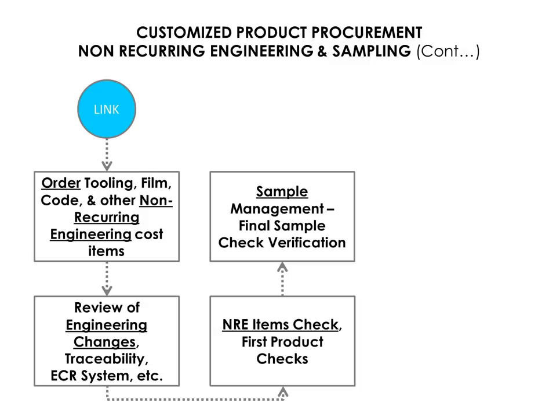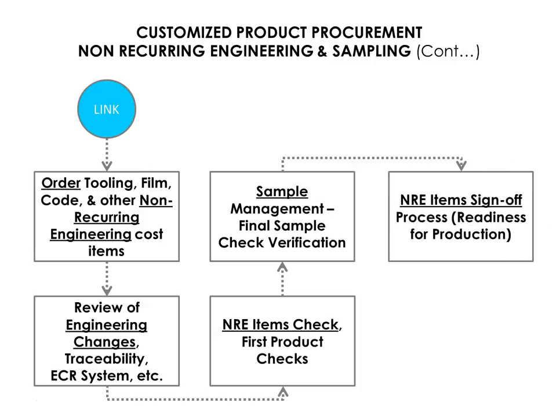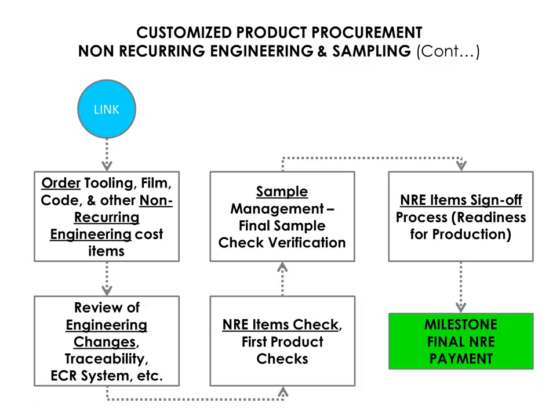The next step in this phase is the actual product and NRE items sign off. This would include you checking every aspect of the parts being produced as well as signing off the functionality and the working state of the NRE item itself. This would be a milestone in your new product introduction plan — the production ready milestone. It also concludes the NRE and sampling phase.